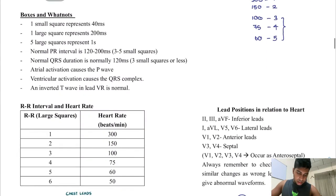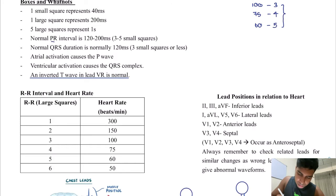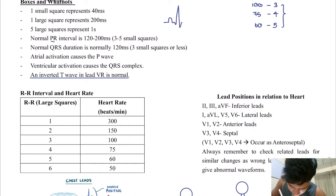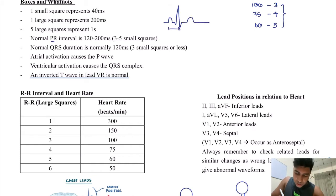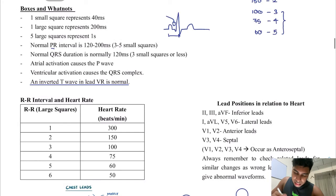This is the summary of all that. An inverted T wave in lead VR is normal. The normal P to R interval is about three to five small squares — this is important because that gap will tell us about a condition called heart block. And the QRS complex is usually around three small squares.